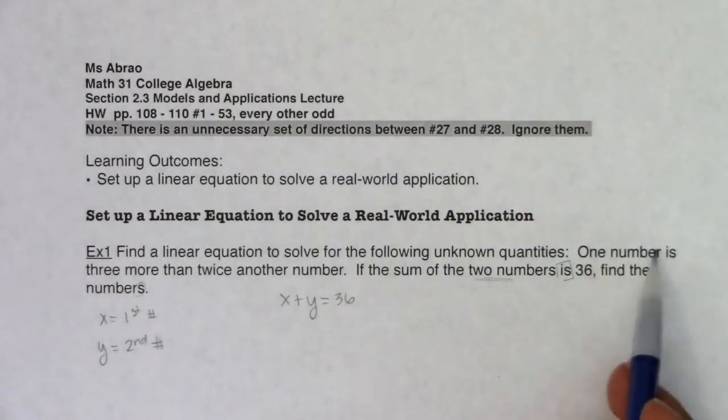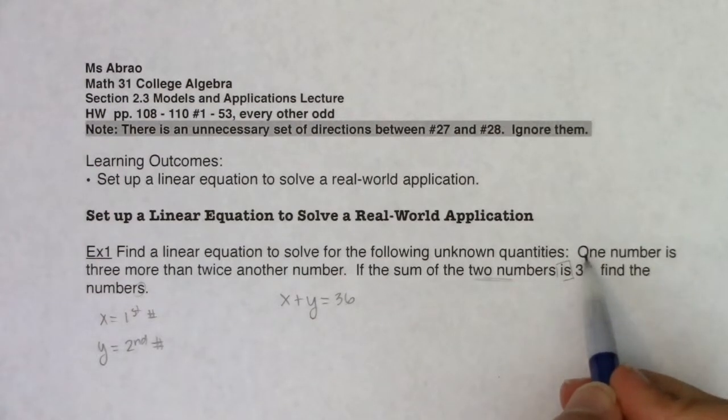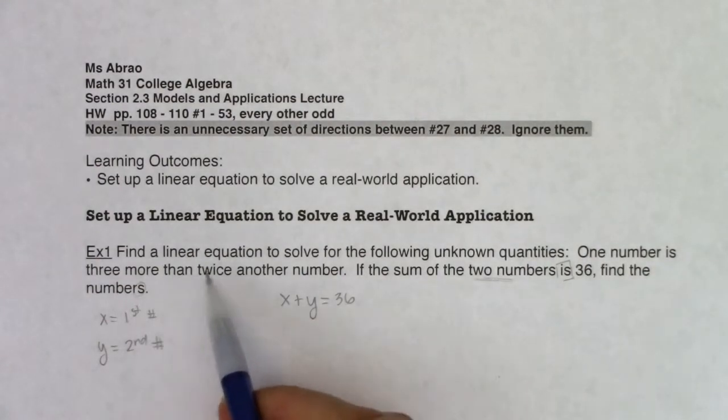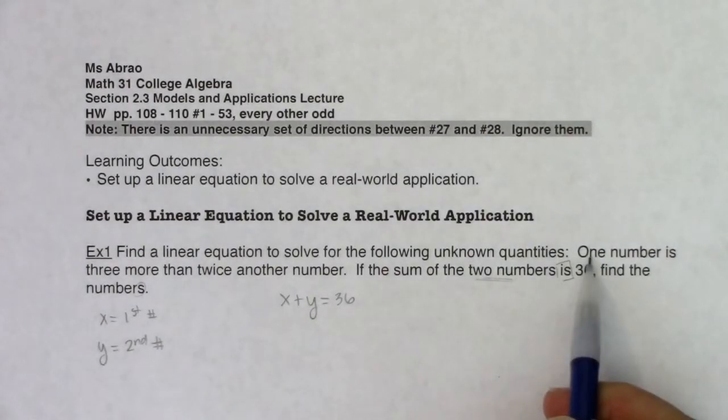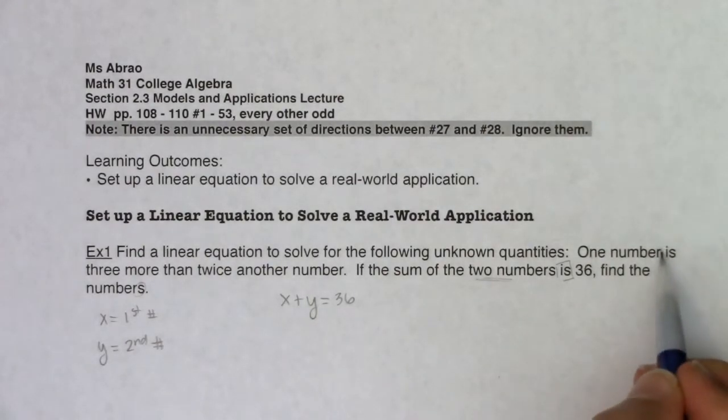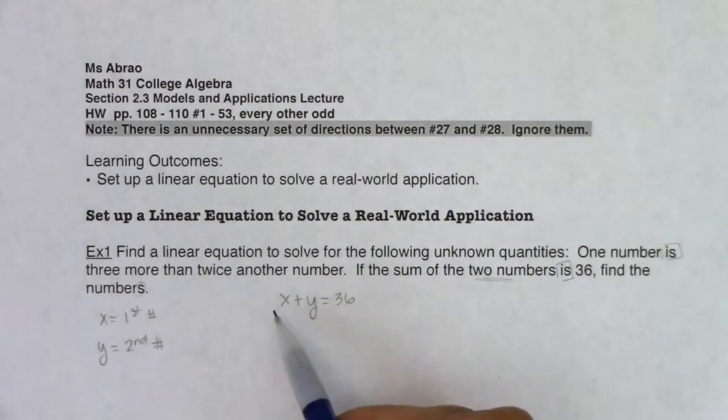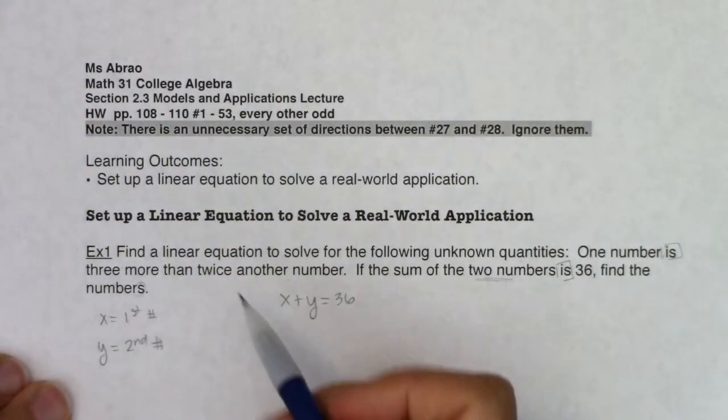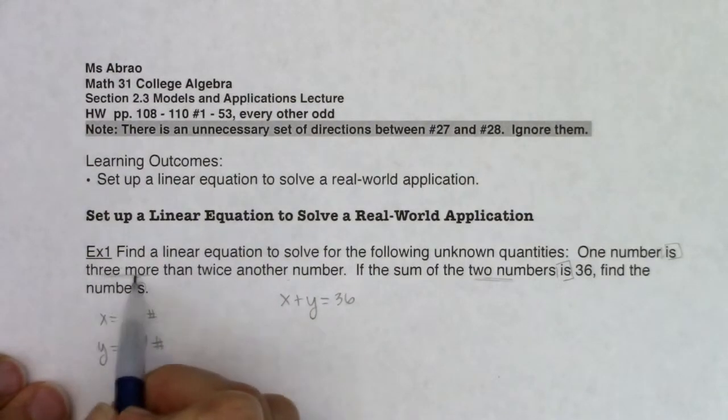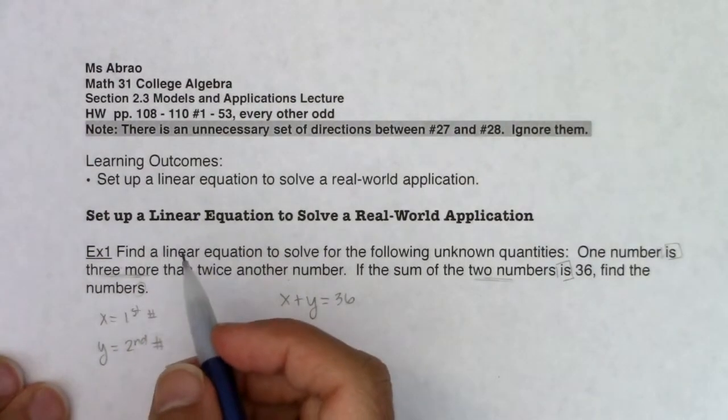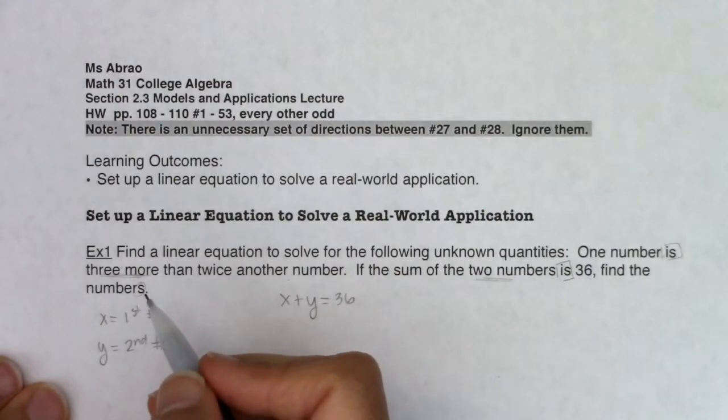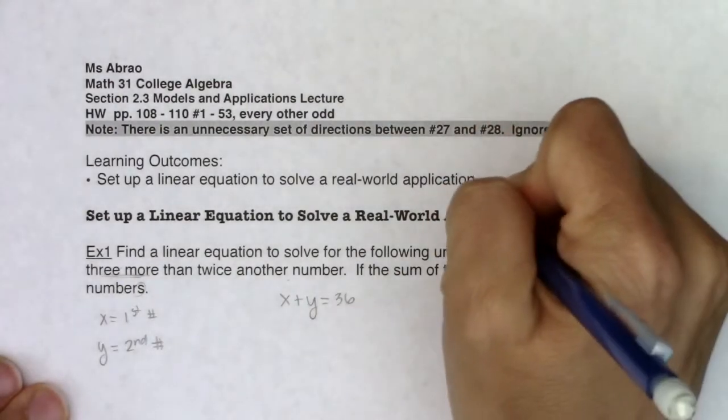Now let's take a look at this sentence. This is the one that's a little bit more convoluted. It says one number is three more than twice another number. I want to point out that 'is': three more than twice another number. Let's unpack each of these vocab terms one at a time.